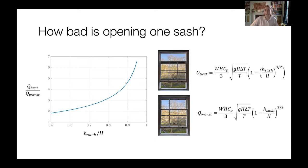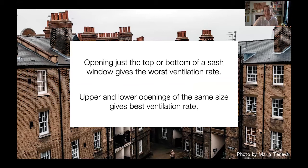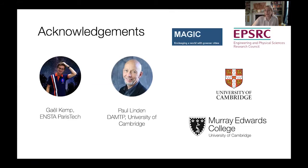That's essentially the end of my talk. The main message: if you just open the top or the bottom of your sash window, you get the lowest flow rate, whereas opening the top and the bottom to roughly equal areas gives the best flow rate — and that's even more true for small openings. I want to thank Gail Kemp who did the experiments during his undergrad and is now starting a PhD, and Paul Linden, professor in the mathematics department. This was part of the MAGIC project — Managing Air for Green Inner Cities — an EPSRC grand challenge project looking at ways to encourage people to use natural ventilation.